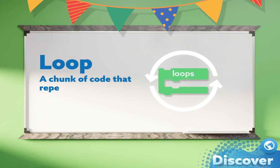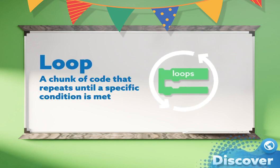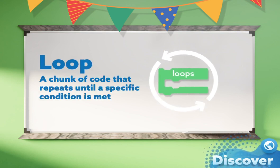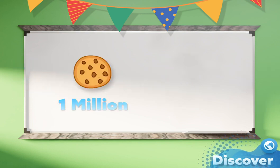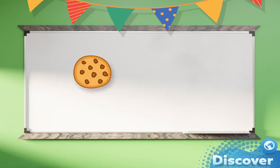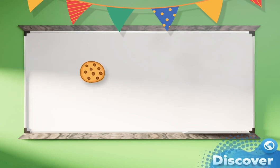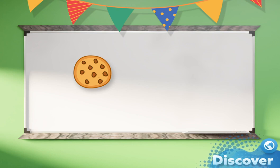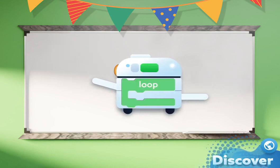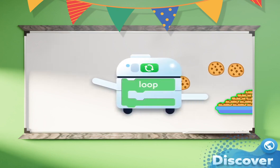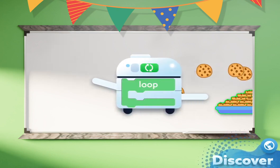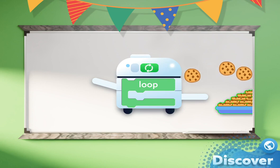A loop is a chunk of code that repeats itself until a specific condition has been met. If we need one million cookies for our party, we need to create the code for just one cookie and then put that code into a loop and it'll repeat itself one million times!